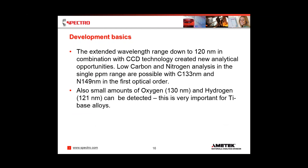The extended wavelength range down to 120 nanometers, in combination with CCD technology, created new analytical opportunities. One was low carbon and nitrogen analysis in the single parts-per-million range — the carbon-133 nanometer line and the nitrogen-149 nanometer line in the first optical order. Other benefits discovered searching in that wavelength range include an oxygen line at 130 nanometers, and way down at 121 nanometers we could detect hydrogen — very important in titanium-based alloys.